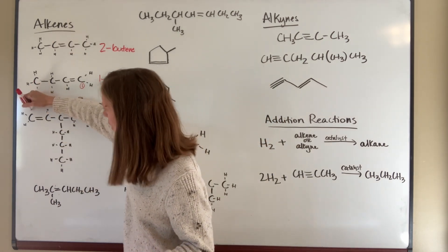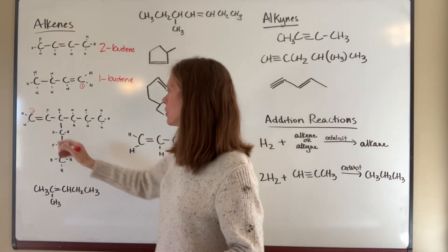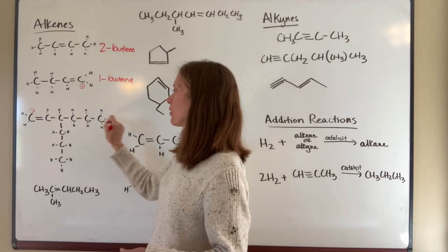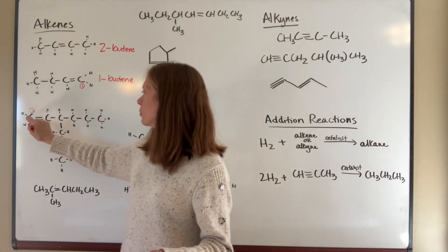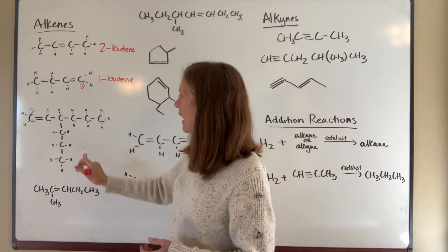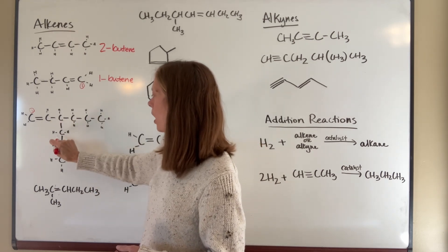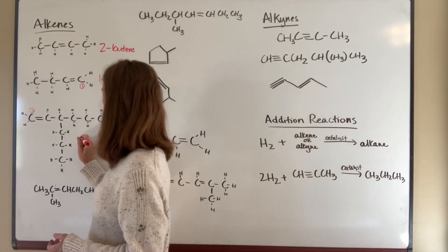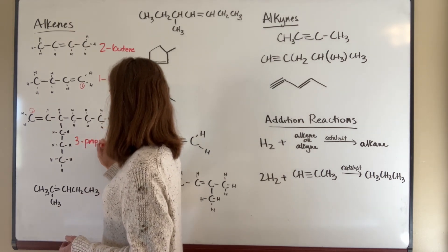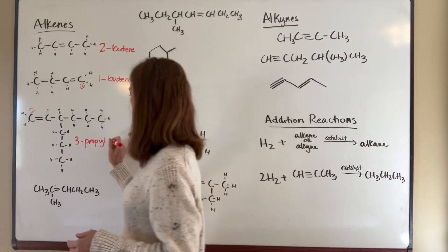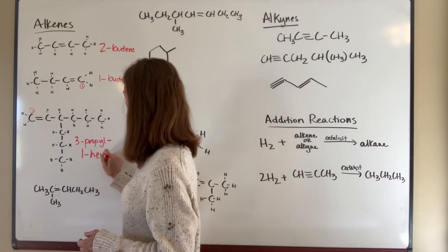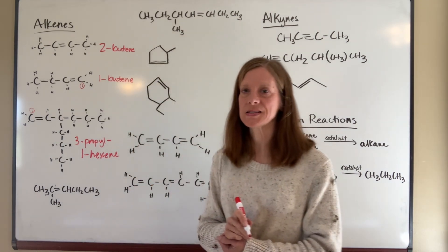Starting from the correct end, I go one, two, three, four, five, six — that's a hexene. Off the number three carbon there is a propyl group, so this compound is named 3-propyl-1-hexene. It's not a heptane; it's a hexene because the chain containing the double bond has six carbons.